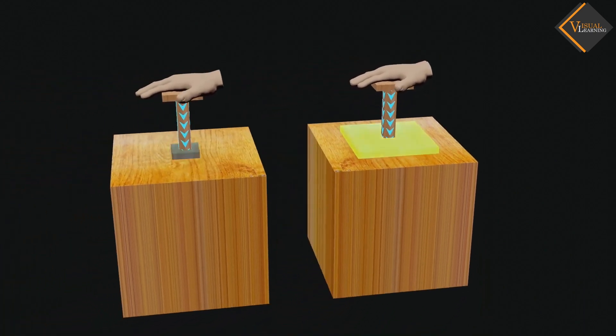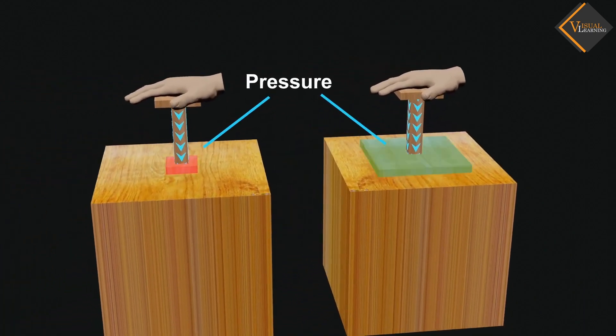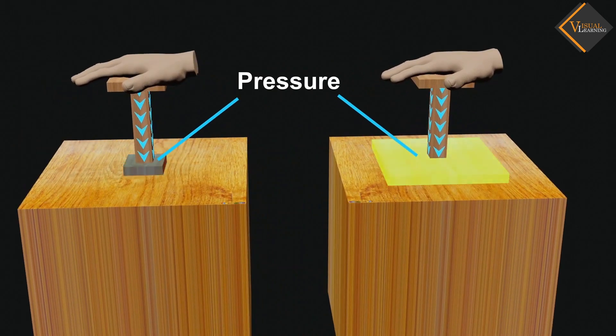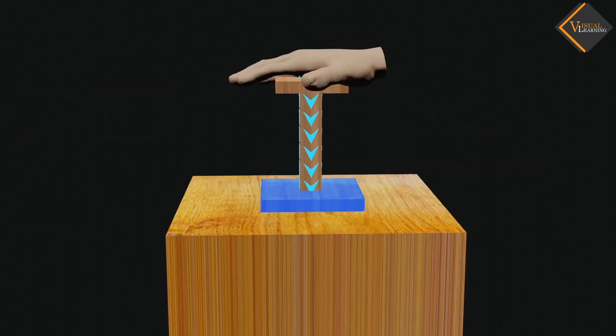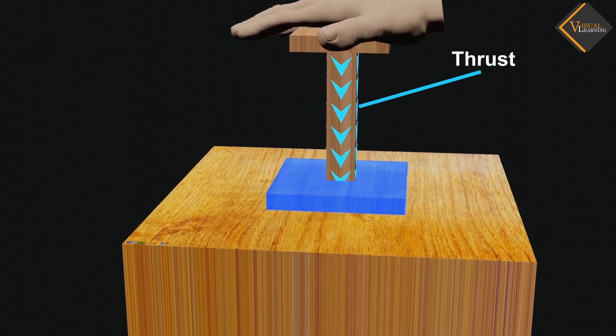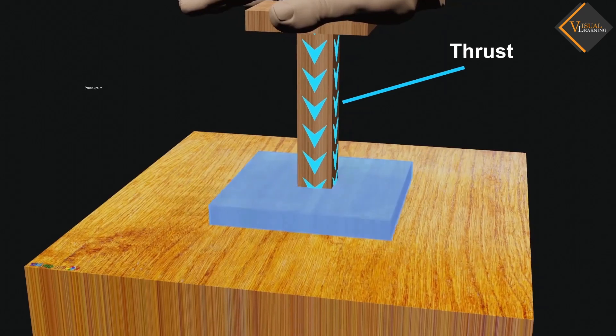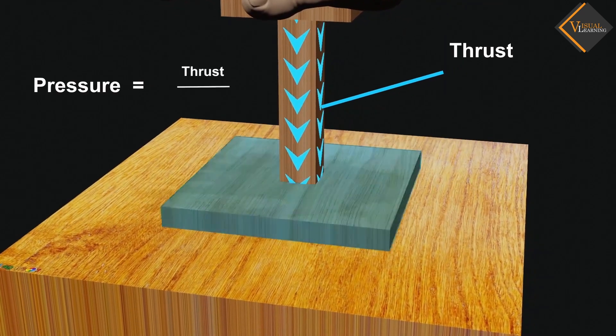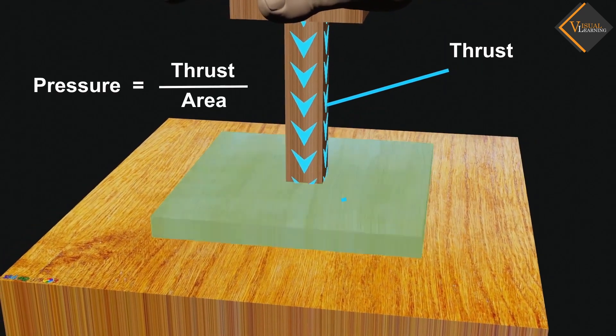Now, this effect is known as pressure. As the perpendicular force is known as thrust, we can define pressure as a ratio of thrust per unit area acting on the surface.